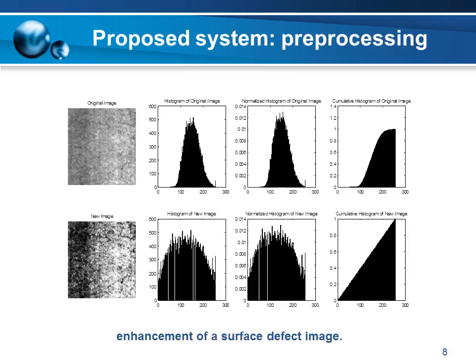Pre-processing is a set of operations performed on the surface defect image in order to reduce the volume of data to be processed, eliminate the noise introduced by the acquisition device, and represent the image in a form appropriate for the feature extraction step. Contrast enhancement is the commonly used method for the image processing step; it is based on histogram equalization, whose basic idea is to adjust the contrast of an image by making the distribution of pixel values more evenly spread across the entire gray scale levels. This figure shows the histogram equalization of a surface defect image.